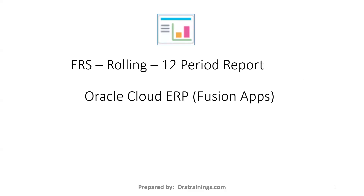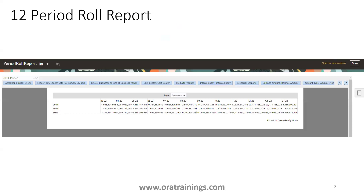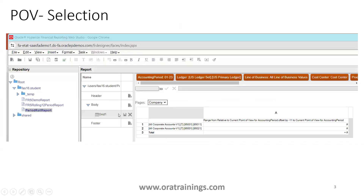Hello all, welcome to orotrainnews.com. In this session we'll discuss a rolling 12 period report in FRS. The expected output will display 12 periods as well as data from two accounts. We'll also look at the POVs we have to select.